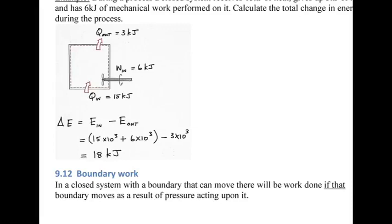In that previous example, it was easy to understand the energy flow because it was a fixed volume with simple arithmetic. However, if one or more edges of a closed system boundary can move, there's going to be work done either inwards or outwards. So in a closed system with a movable boundary, there will be work done if that boundary moves as a result of pressure acting upon it — for example, a piston in a cylinder or a balloon that inflates under pressure.